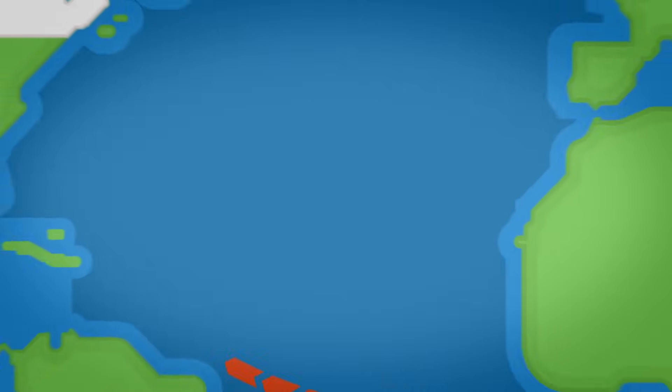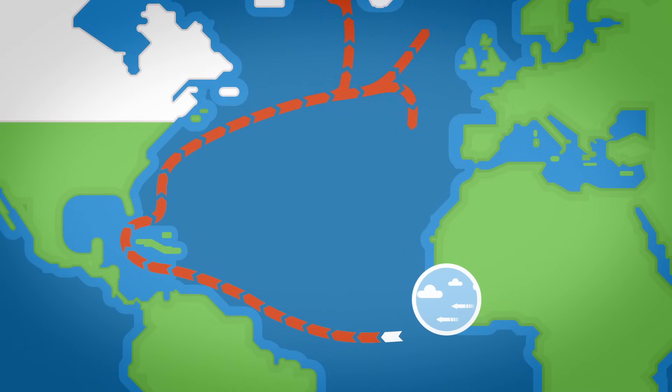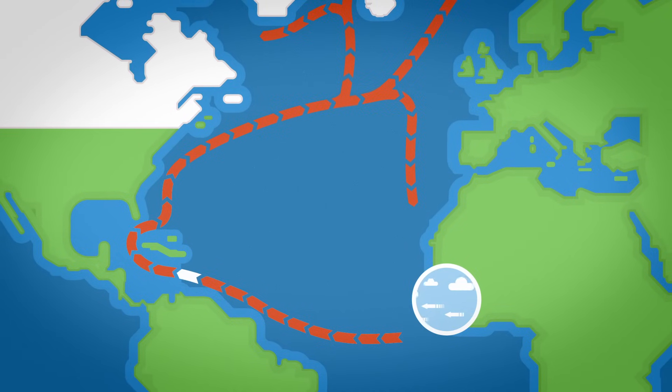A constantly blowing wind, the southeast trade wind, drives warm surface water to the northwest into the Gulf of Mexico where it heats up to 30 degrees Celsius.